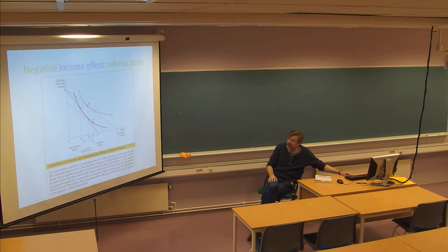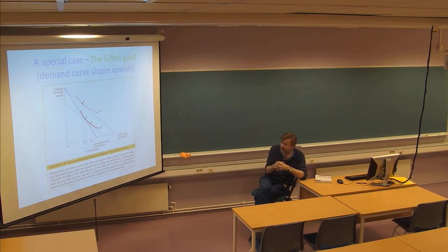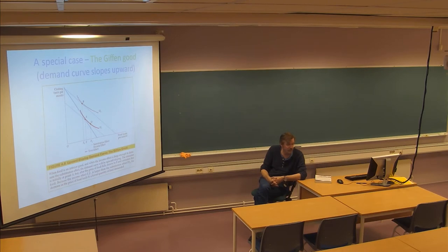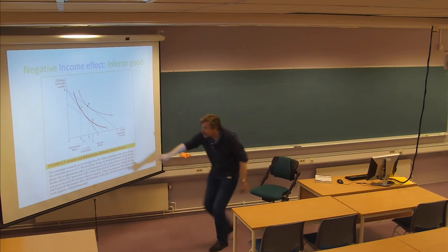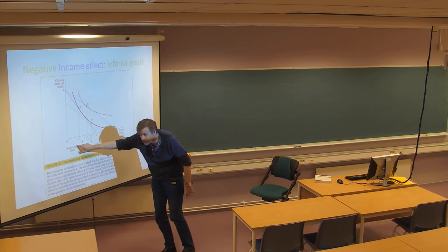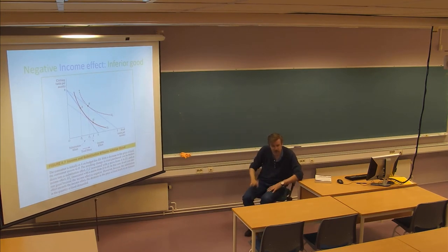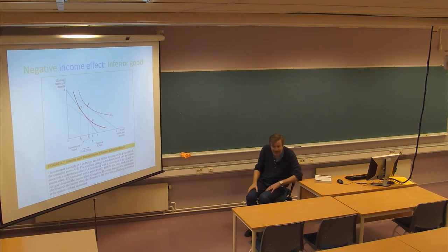Now let's look at a different type — a so-called Giffen good. Recall an inferior good is one you buy less of when income rises. We can think of a situation where the negative income effect is larger than the substitution effect. We had a positive substitution effect, a negative income effect, and a net positive effect — but if the negative income effect is large enough, the total effect becomes negative: the price goes down and you buy less. That is a Giffen good.